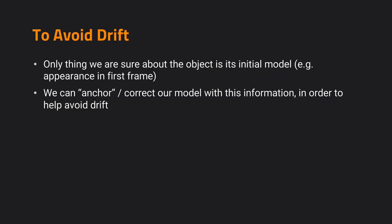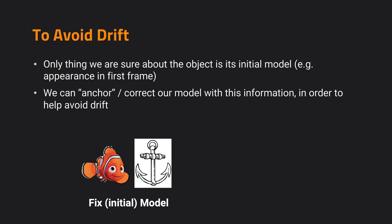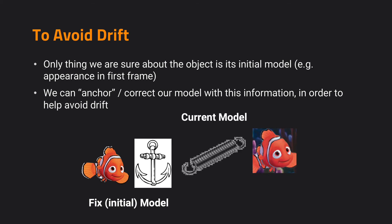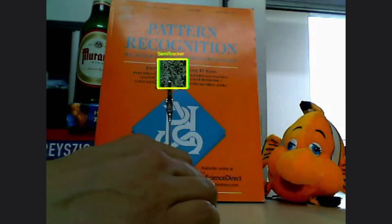The model drift turns out to be a very nasty problem. Fortunately, we have a very simple cure for it. We can turn to something we are really confident about — that is our ground truth on the first frame, or the object we used to build the initial model. Because of our confidence, and because it's absolutely correct, we can always use it to anchor our model to avoid model drift. Basically, we use our initial model and fix it, and use it to balance the results of our current model.